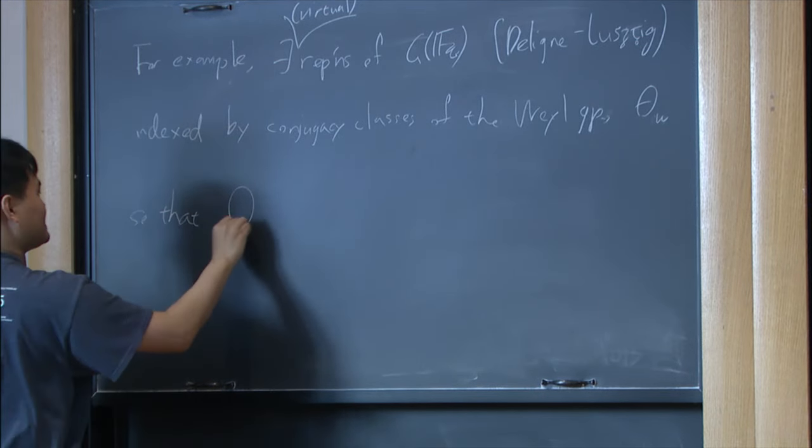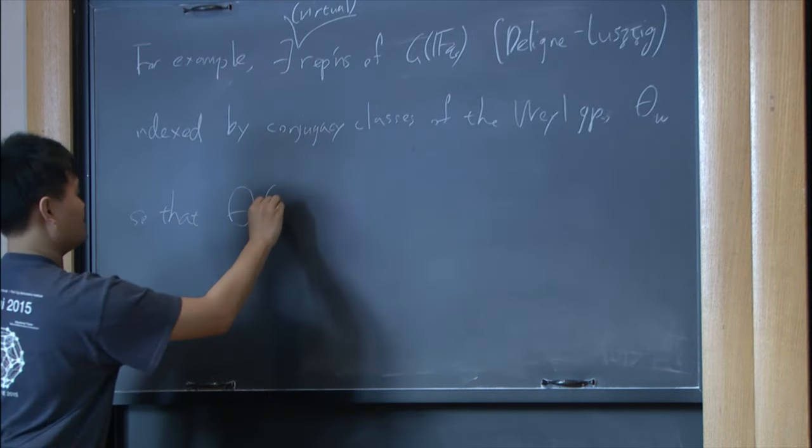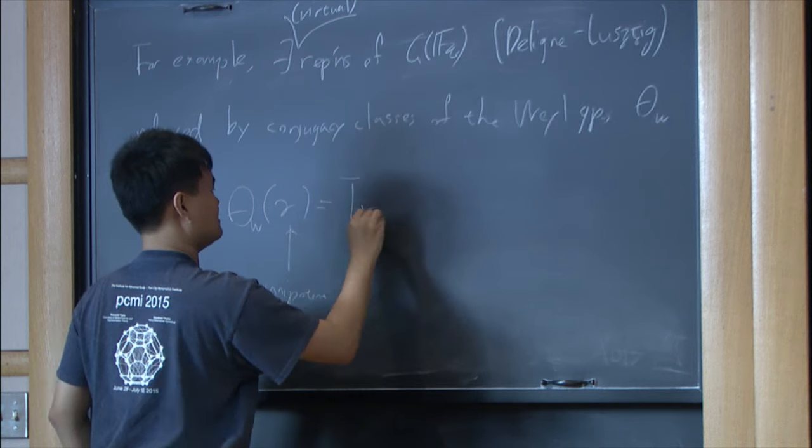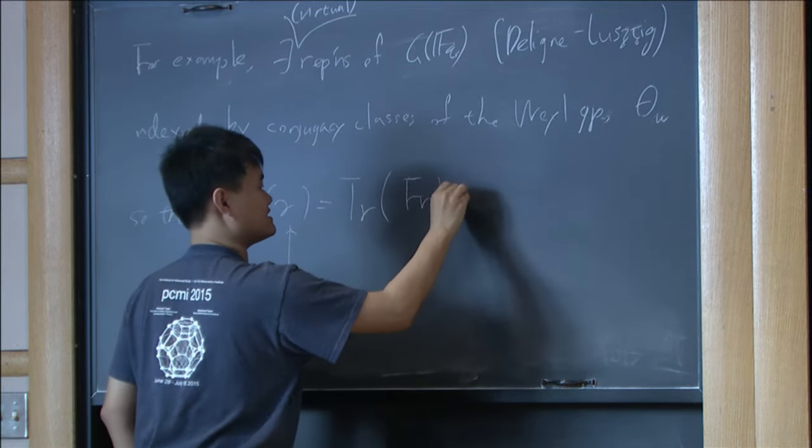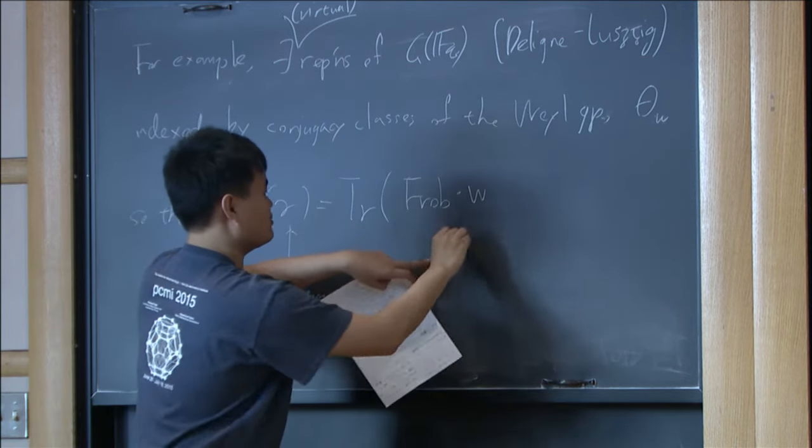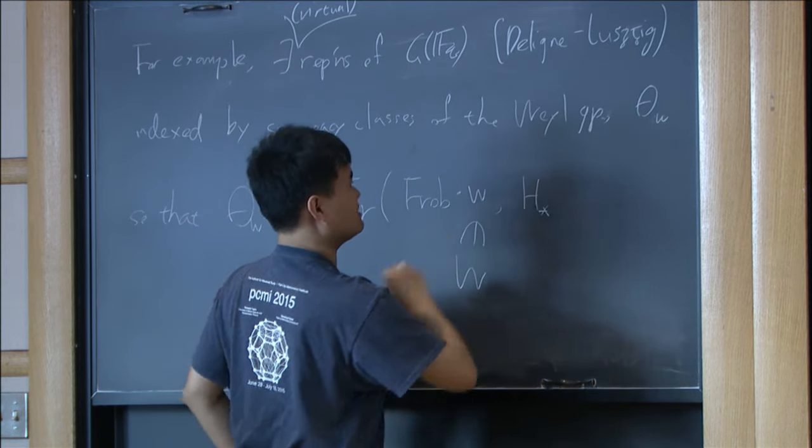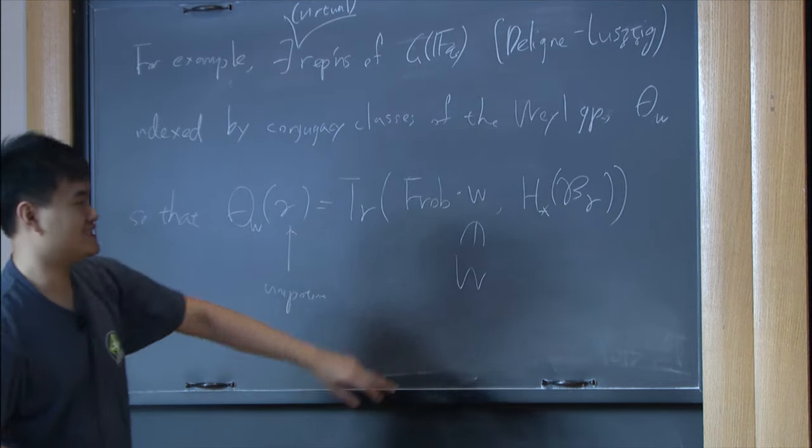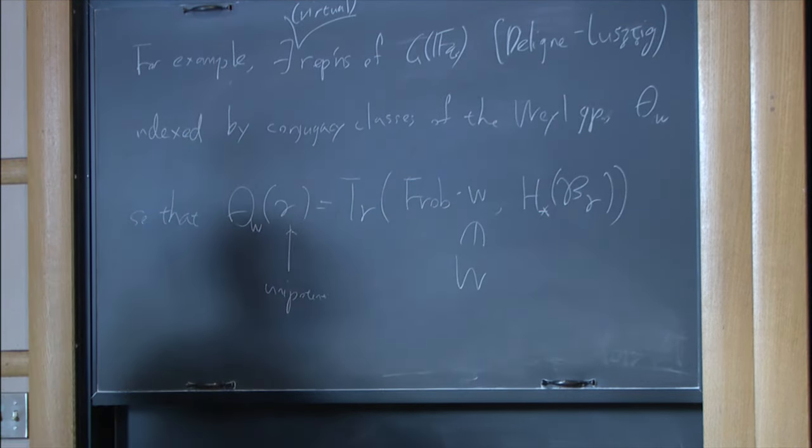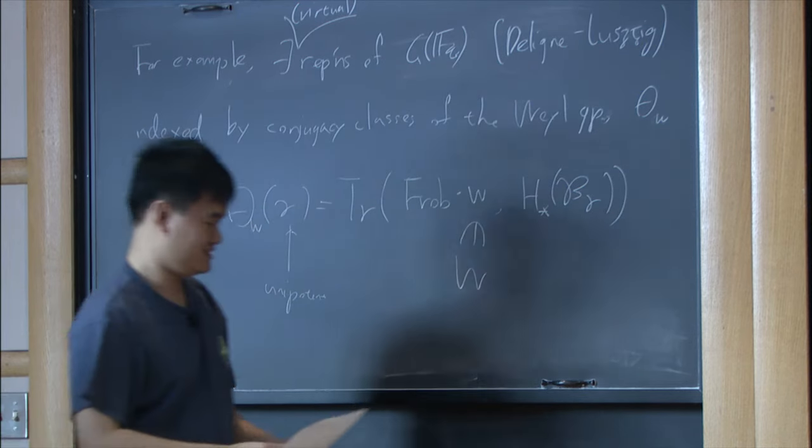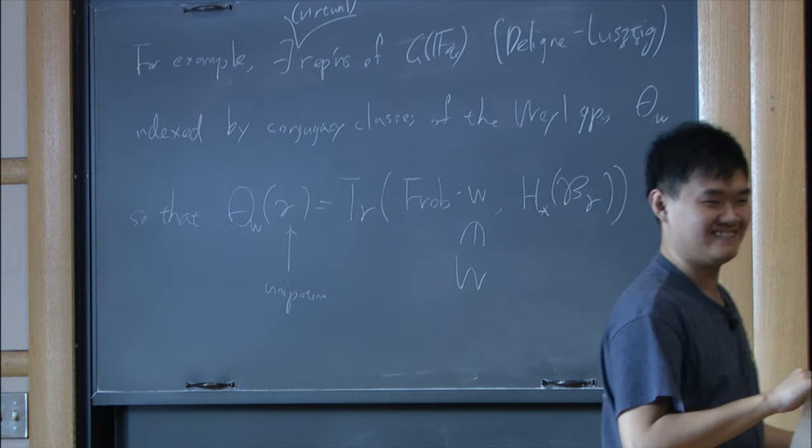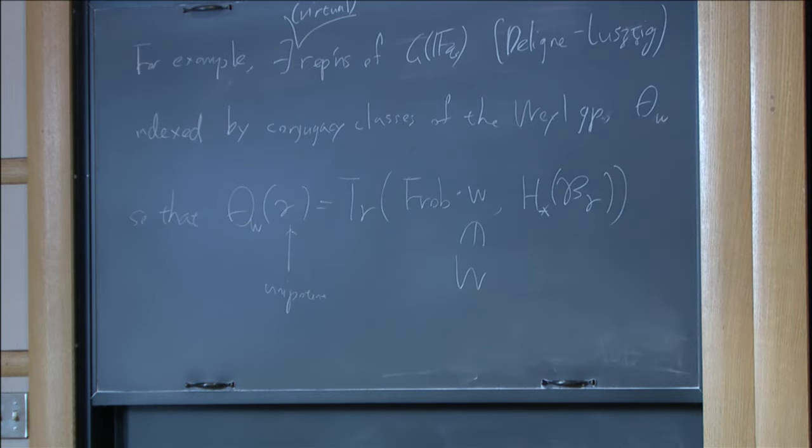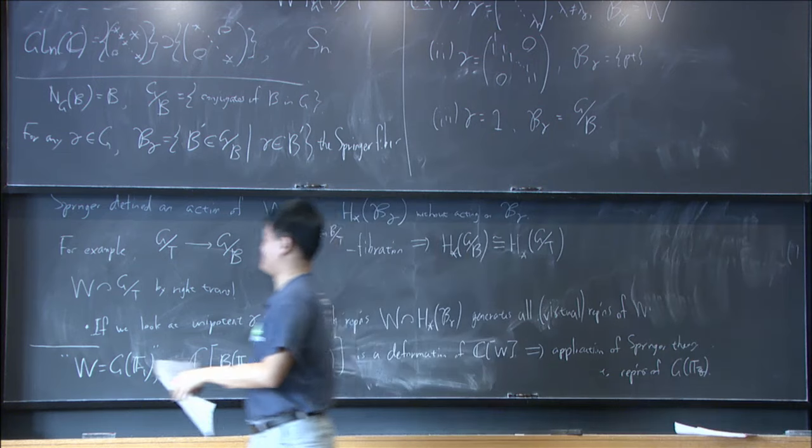Theta_w, so that the character of theta_w on such a gamma, such a unipotent gamma, is defined by the trace of Frobenius times w. W is the element of the Weyl group on the homology of these varieties. So in this case, this variety is defined over F_q, and you have to use etale cohomology. But anyway, these things. How many minutes do I have? Thank you. That's very nice. Thank you.